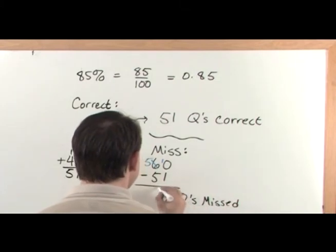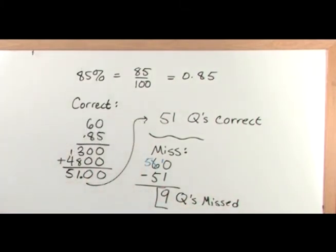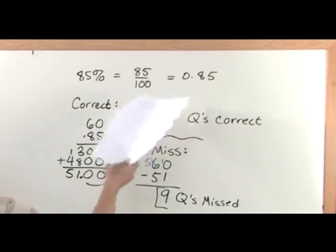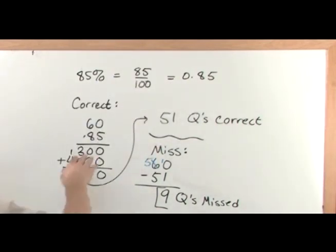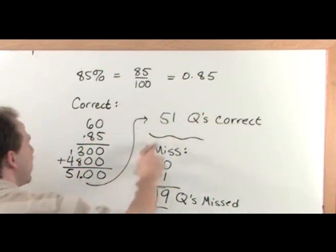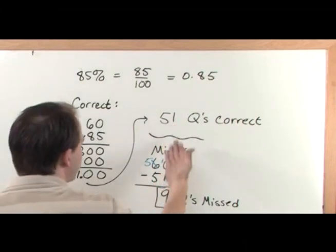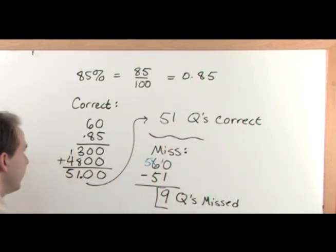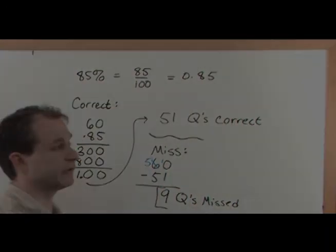This is really useful stuff. Here you have 60 questions on the test. You score a grade of 85, which is 85%. And we multiplied by 85% in terms of the decimal to find out how many questions he got correct. And then after we knew how many he got correct, we subtracted from the number of questions on the test to find how many he actually missed.